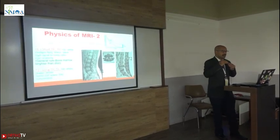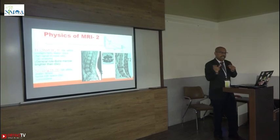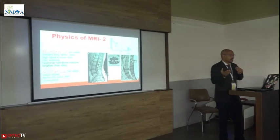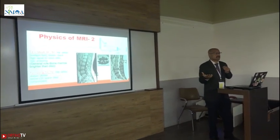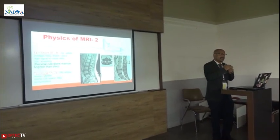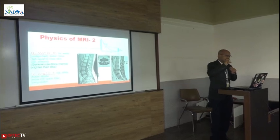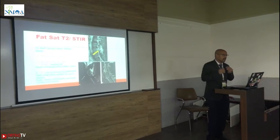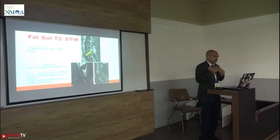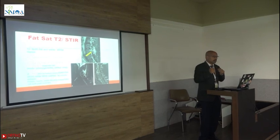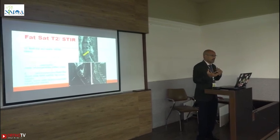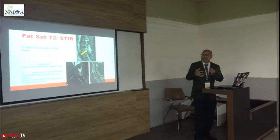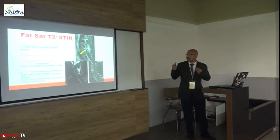In T2 imaging, you have a long TR and TE — the echo and repeat are both long. That's why both fat and water will be seen as white. This is very useful for seeing the CSF and disc structures which are compressing on the nerves. Because both fat and water appear white, we need fluid-sensitive sequences to differentiate between them.